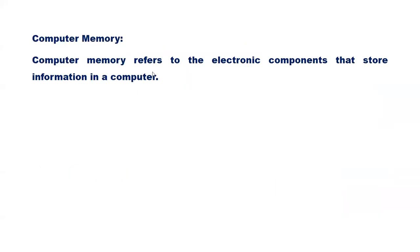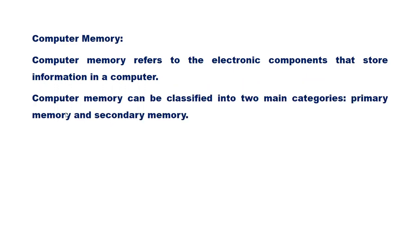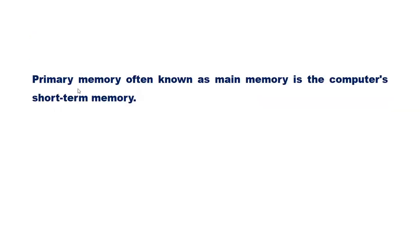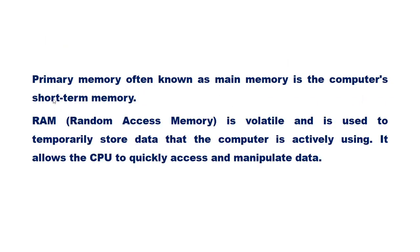Computer memory refers to the electronic components that store information in a computer. Memory can be classified into two main categories: primary memory and secondary memory. Primary memory, often known as main memory, is the computer's short-term memory. There are basically two types of primary memory: RAM and ROM. RAM, or random access memory, is volatile — its data will be lost when the power is switched off.